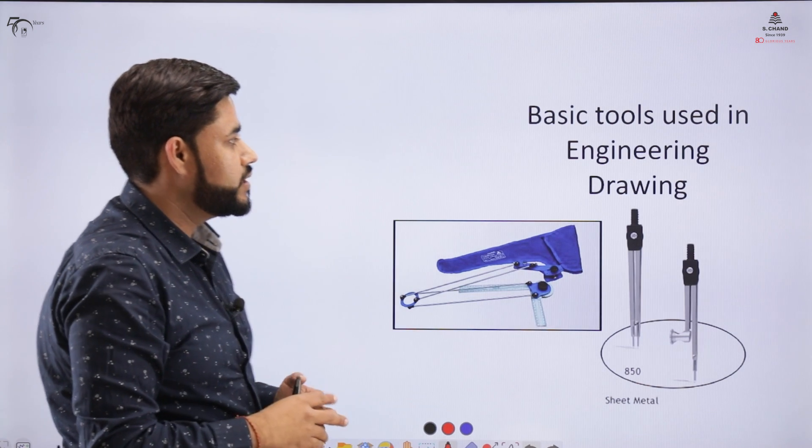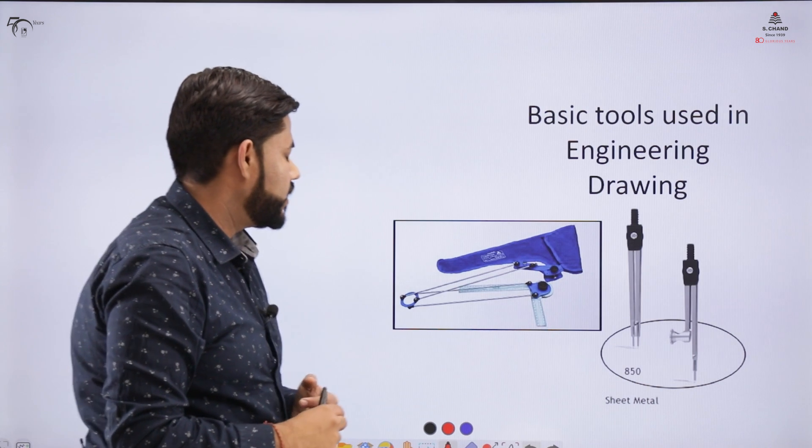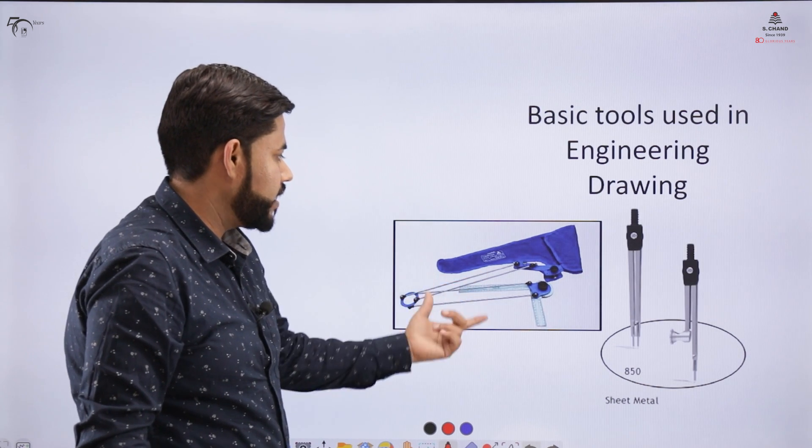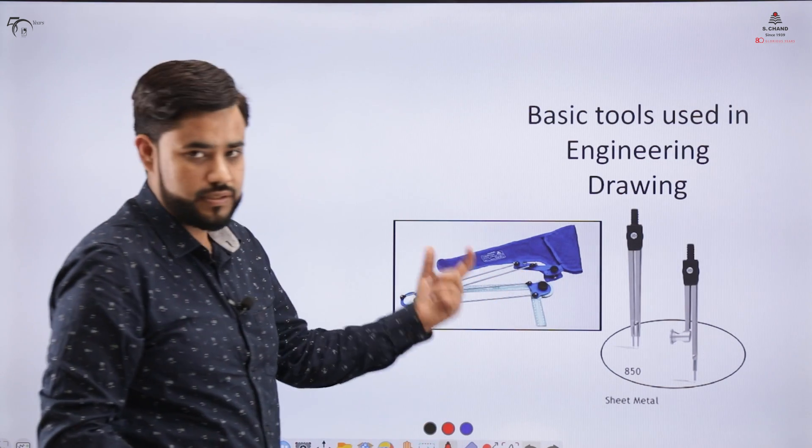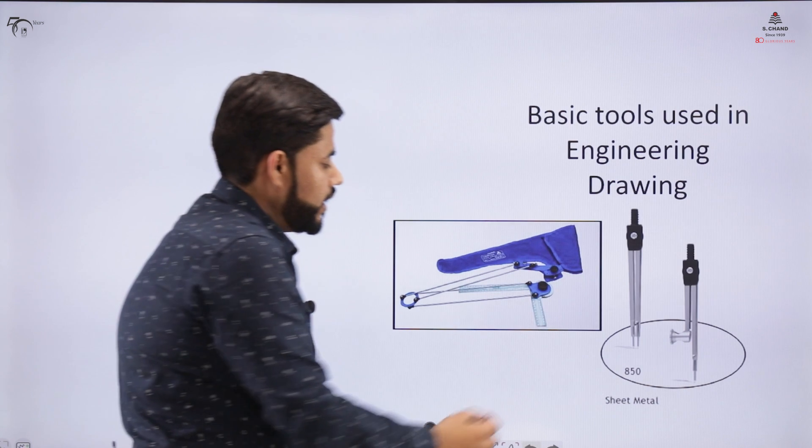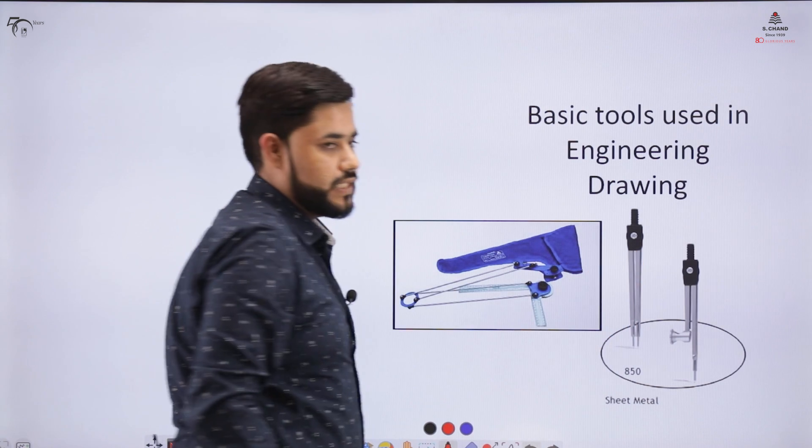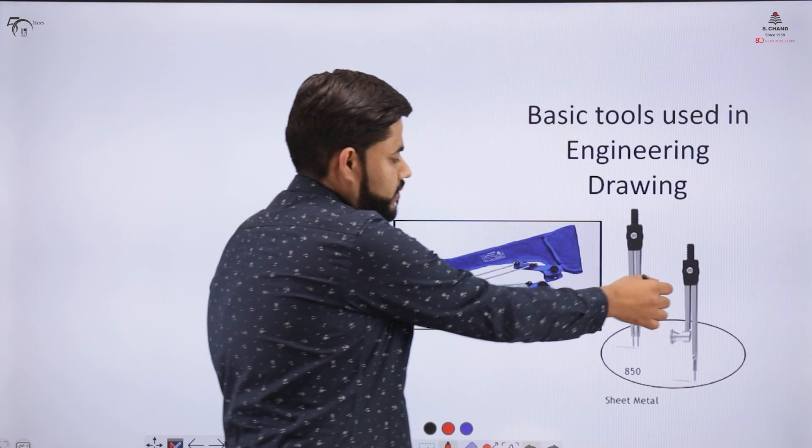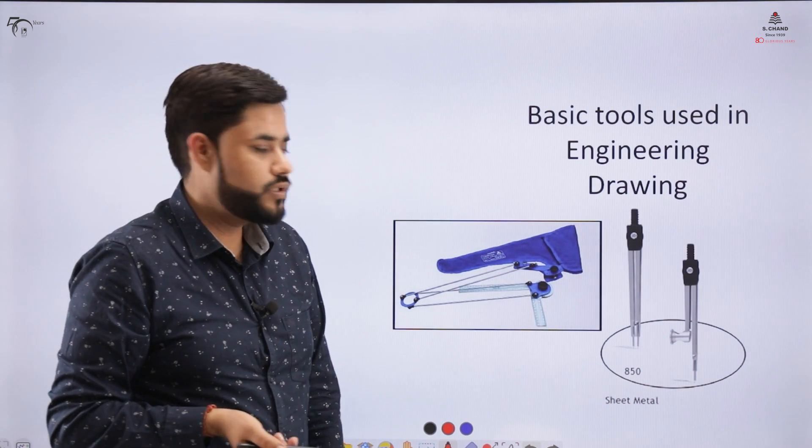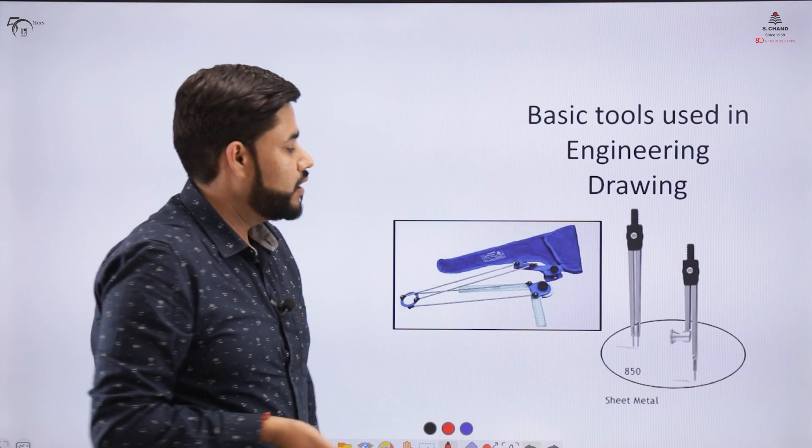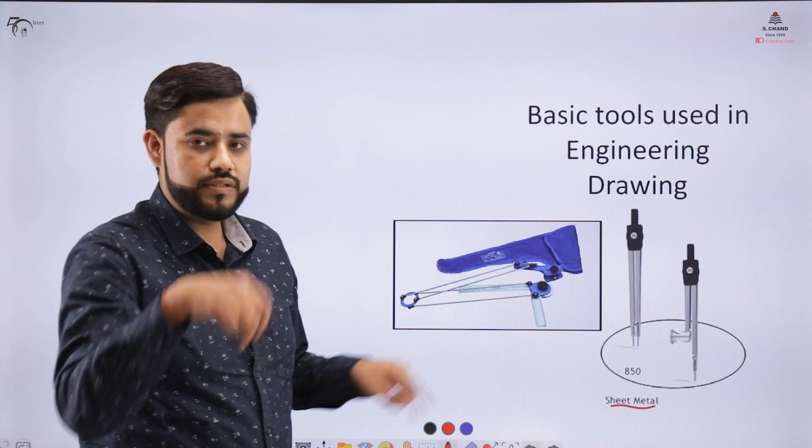The basic tools you will be using for engineering drawing: number one is the mini drafter, which is a multipurpose tool that has a scale and a protector. Then we have the compass and the divider. The compass is used in engineering drawing to make circles and is used specifically in the sheet metal industry to draw circles on the object.